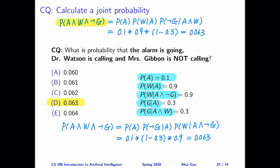The first ordering we are going to try is A first, then W, then not G. Given this ordering, we have the following expression.